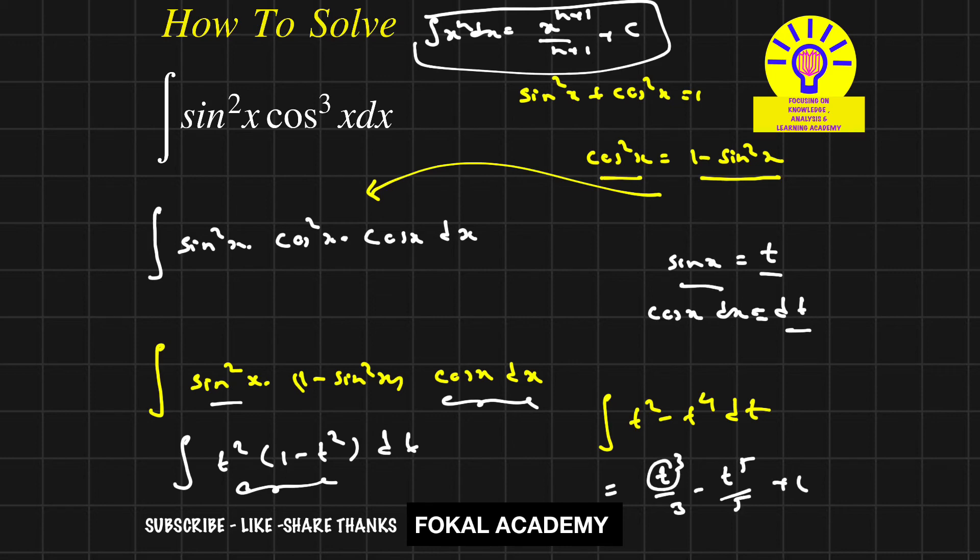So t means sin x. The equation becomes sin³x/3 minus sin⁵x/5 plus c. This is the required solution for the given problem, using the substitution method.